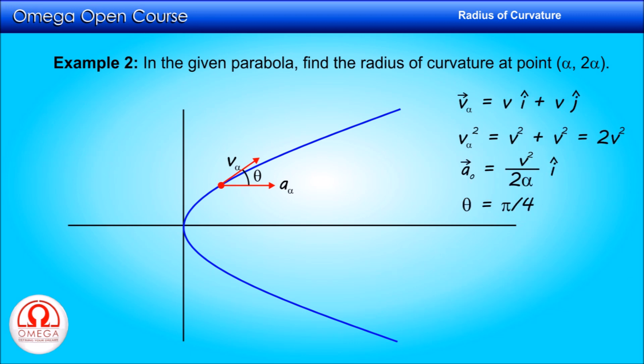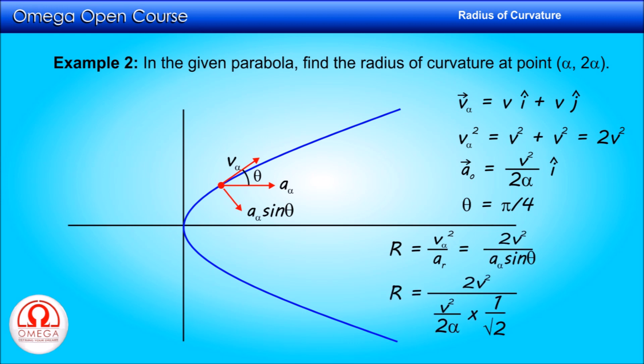Now the radius of curvature is given by the square of speed divided by radial acceleration. The square of speed at the point is 2v², and since the angle between the velocity vector and acceleration vector is theta, the radial acceleration is acceleration times sin theta. Putting the values, we get r = 2v² / (v² / 2α · 1 / √2). Simplifying, we get radius of curvature at this point is equal to 4√2 α. This is our answer.